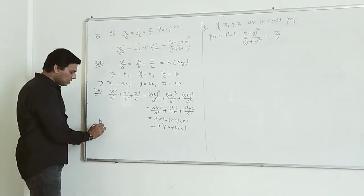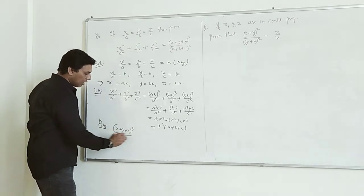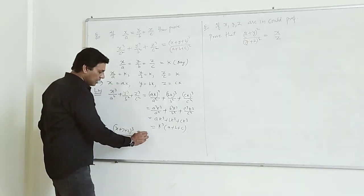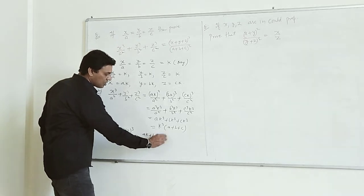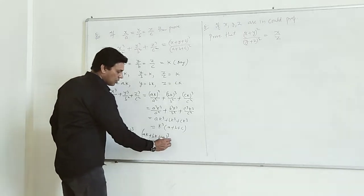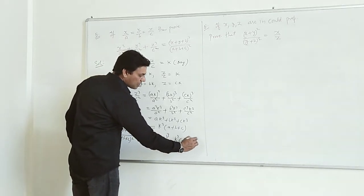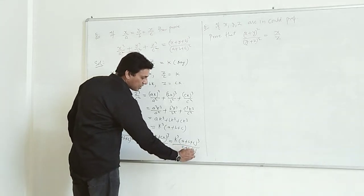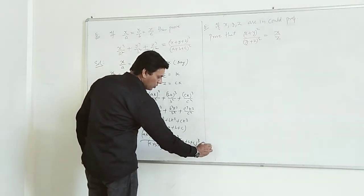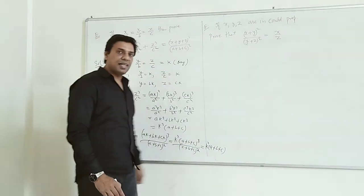Now taking the right hand side, which is (X+Y+Z)³ upon (A+B+C)². Substituting X=AK, Y=BK, Z=CK, numerator becomes (AK+BK+CK)³ = K³(A+B+C)³. Divided by (A+B+C)², we cancel (A+B+C)² from numerator and denominator, leaving K³(A+B+C). Since left hand side equals right hand side, we have proved it.